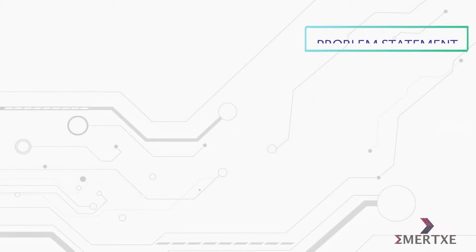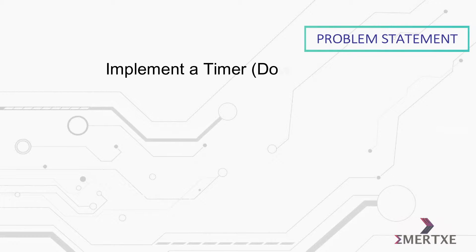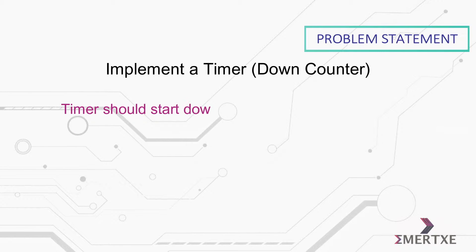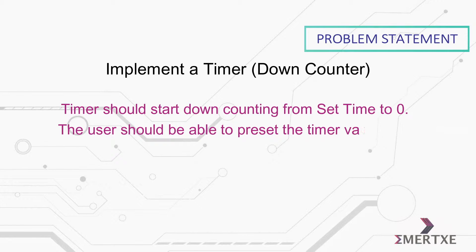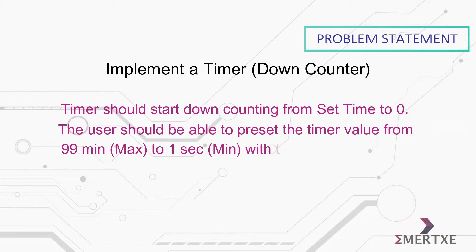In this assignment you have to implement a timer. The timer should start down counting from set time to zero. The user should be able to preset the timer value from 99 to 1 second with the help of switches.